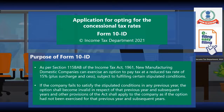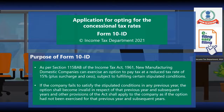If the company fails to satisfy the stipulated conditions in any previous year, the option shall become invalid in respect of that previous year and subsequent years, and other provisions of the Act shall apply to the company as if the option had not been exercised for that previous year and subsequent years.